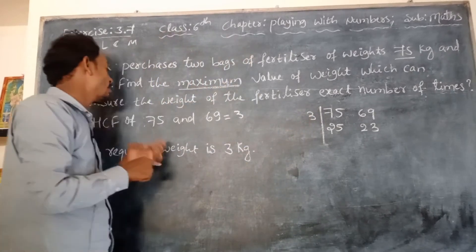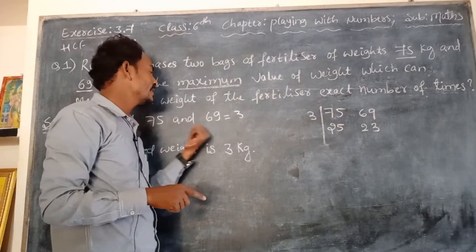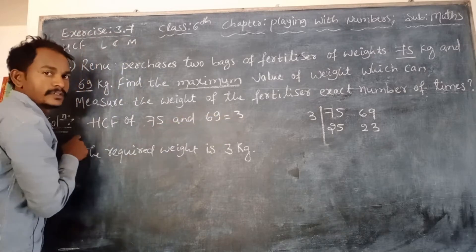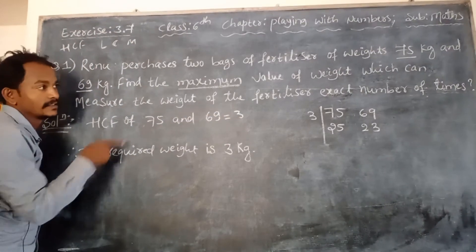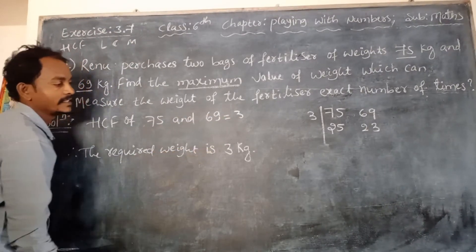So the HCF of 75 and 69 is 3. Therefore, the required weight is 3 kg.